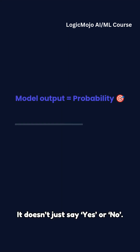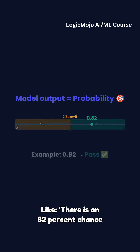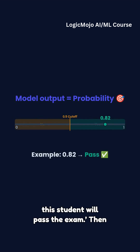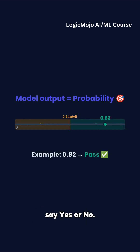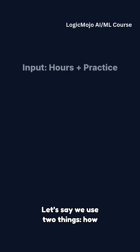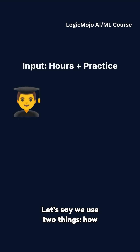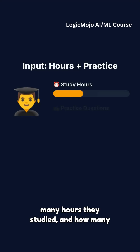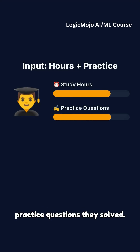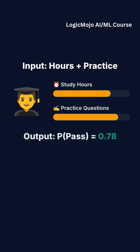It doesn't just say yes or no — it gives a probability, like there is an 82% chance this student will pass the exam. Then we choose a cutoff, usually 0.5, to say yes or no. Let's say we use two things: how many hours they studied and how many practice questions they solved.